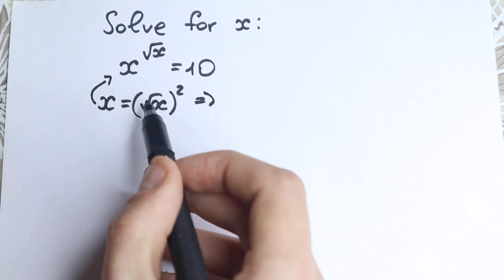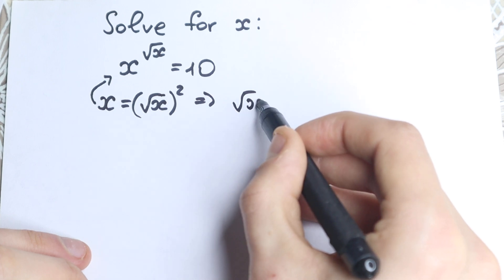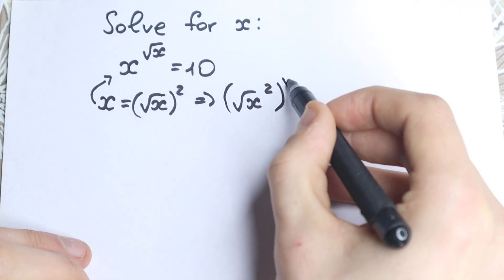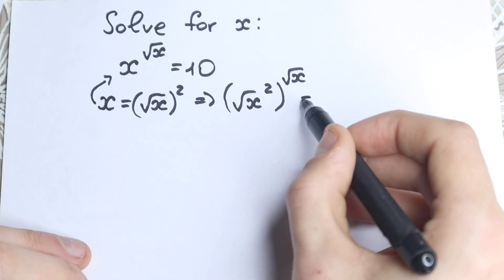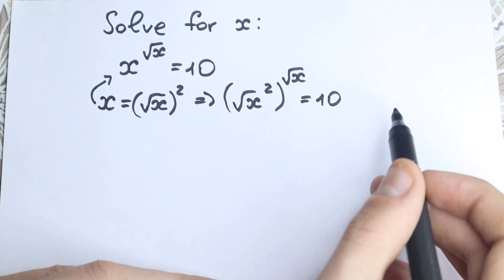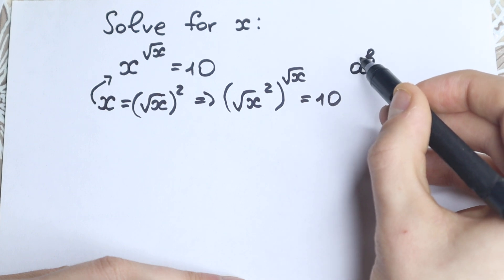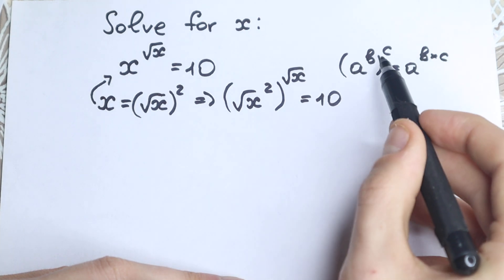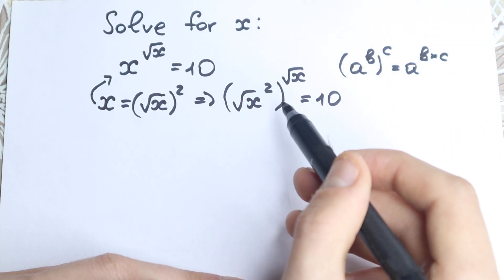Now let's replace this x with (√x)². So we have (√x)² raised to the power √x, equal to 10. This is completely the same value. Now we apply the power rule: (a^b)^c = a^(b·c). So we can multiply 2 times √x, giving us √x to the power 2√x equals 10.